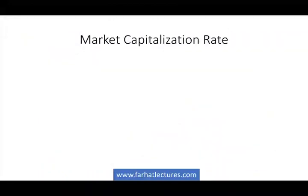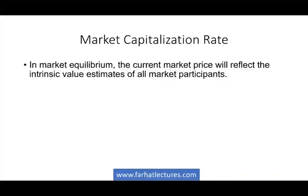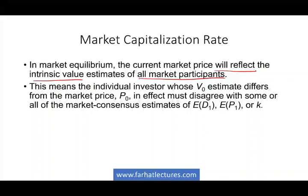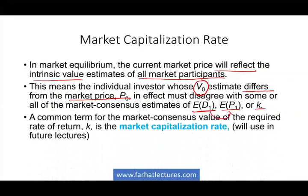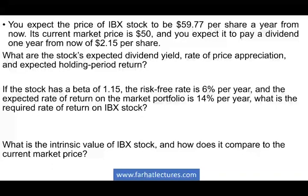Now we have a term called market capitalization rate. In market equilibrium, the current price will reflect the intrinsic value estimate of all market participants. An individual investor whose intrinsic value estimate V0 differs from the market price might disagree on one of three factors: the expected dividend, the expected price of the stock, or the required rate of return K. The market consensus value of the required rate of return K is called the market capitalization rate, and we will be using this in future lectures.